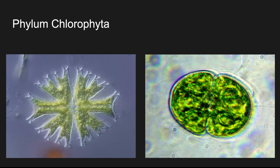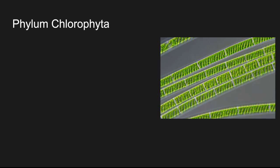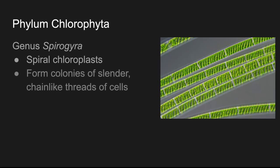Here are some more examples of phylum Chlorophyta. This would be genus Desmid, and they have the appearance of two halves pinched in the middle. Some more out of phylum Chlorophyta — this is genus Spirogyra. They have spiral chloroplasts. If you look closely, obviously this is under a microscope, but it looks like the footprint of a slinky in there — those are spiral chloroplasts. They form colonies of slender, chain-like threads of cells.